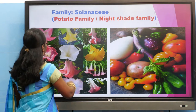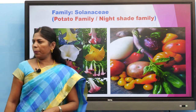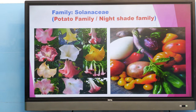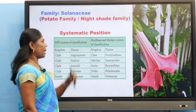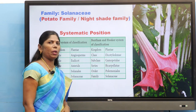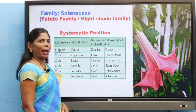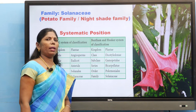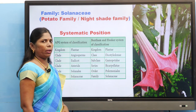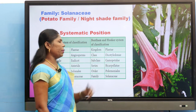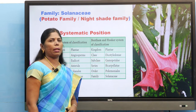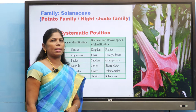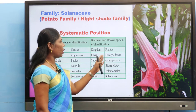First we are going to see the systematic positions of the plant. In the Bentham and Hooker system of classification, the kingdom is Plantae. Class is Dicotyledonae — dicots have a taproot system, reticulate venation, pentamerous or tetramerous flowers, and two cotyledons. These are all characters of dicotyledons.